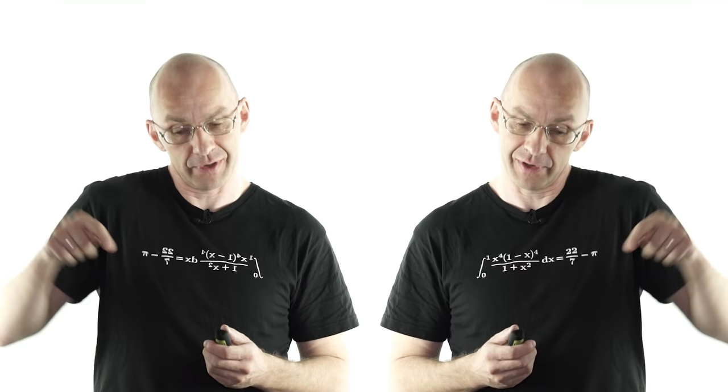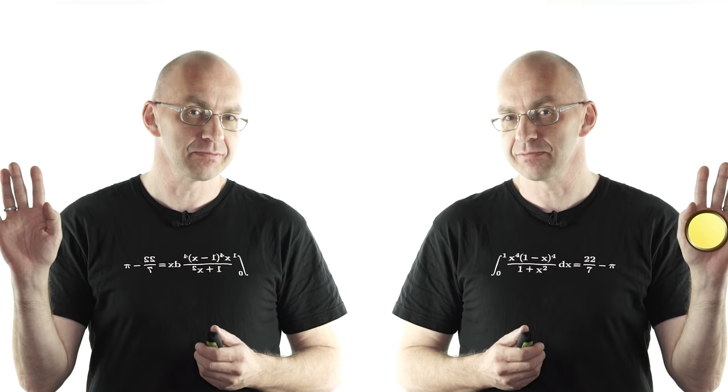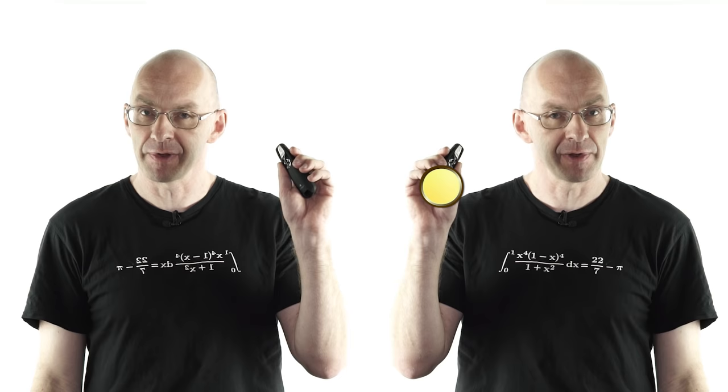When I point up, mirror mythologer points up. When I point down, mirror mythologer points down. When I raise my left hand, mirror mythologer raises his right hand. When I raise my right hand, mirror mythologer raises his left hand. Strange.